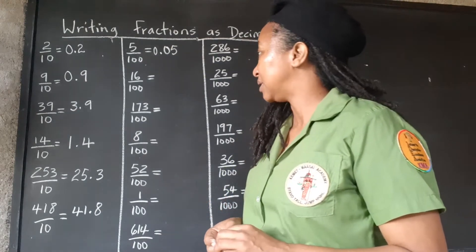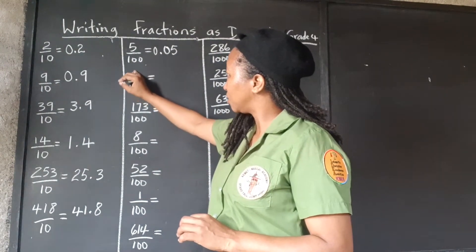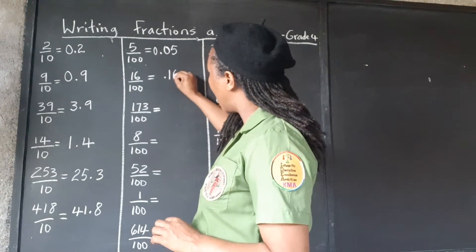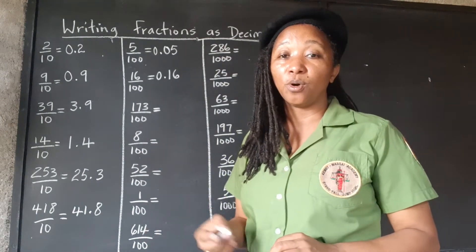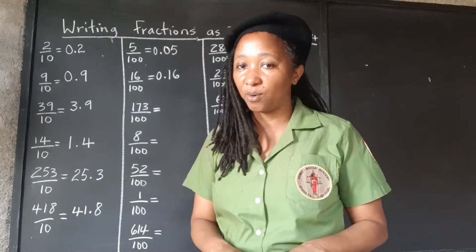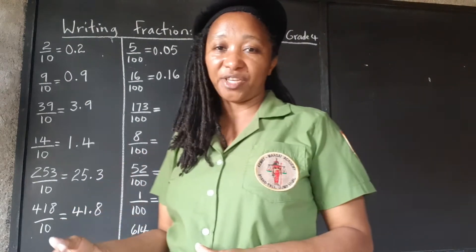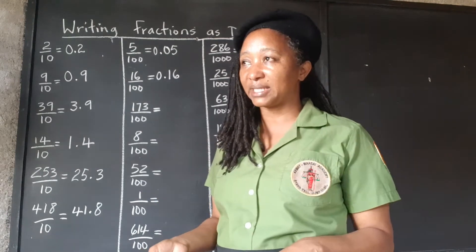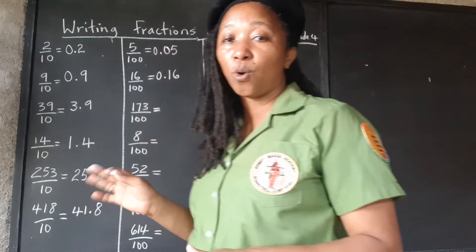For 16 hundredths, we're dividing by 100 and moving two places to the left. Two places takes us right in front of the 1, and we also need our placeholder to the left to indicate there is no whole number there. Bear in mind, 0 is a whole number — when I say there's no whole number, I mean nothing bigger than 0. So we're just holding that space with zero.